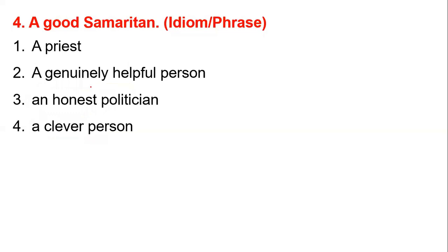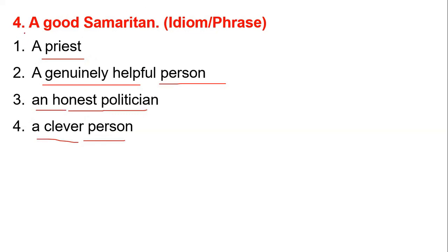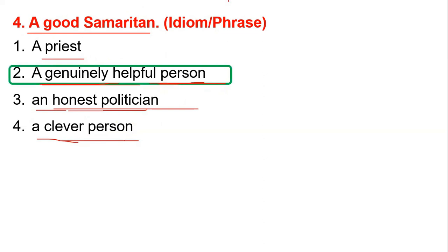Number four: a good Samaritan. Options are: a priest, a genuinely helpful person, an honest politician, a clever person. A good Samaritan means a genuinely helpful person. So option number two — a genuinely helpful person — is correct.